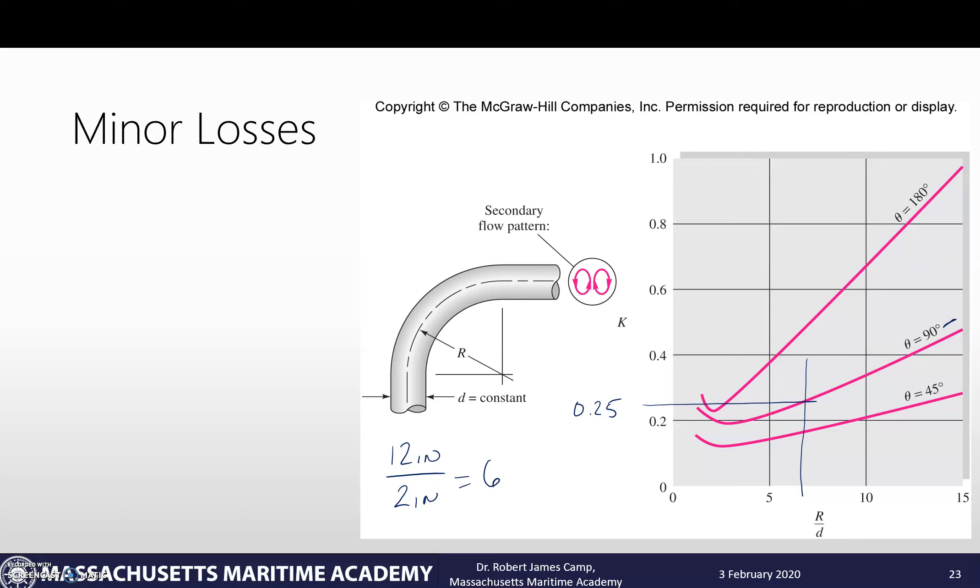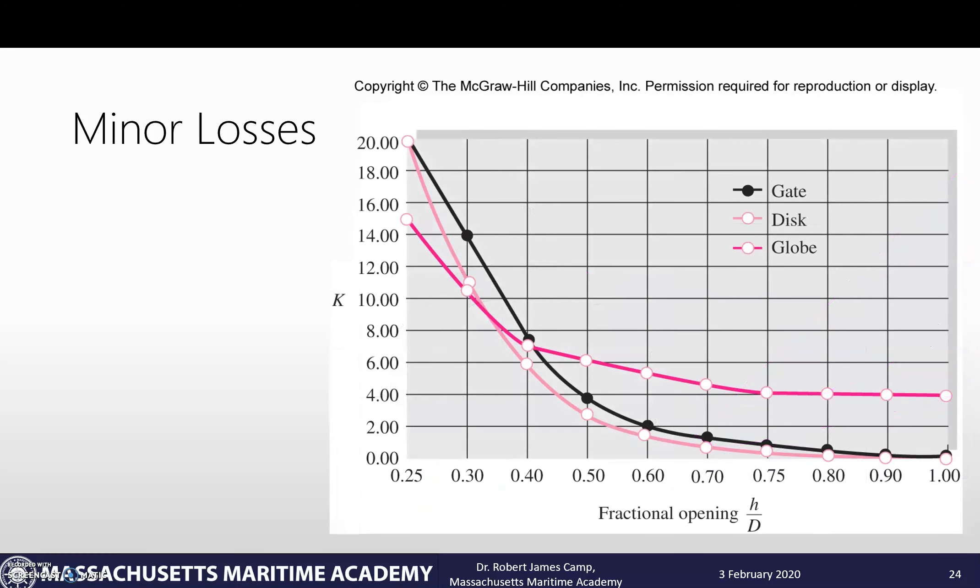Before we get to the sharp exit, we've got one more thing - we have a half closed gate valve. We have this chart of fractional openings in our textbook, so we're going to be looking at gate valves, which is the black line. The fractional opening is h over d, where h is how much of the pipe is open. A value of one would be completely open, so we're going to be looking at it being half open, which would be 0.5.